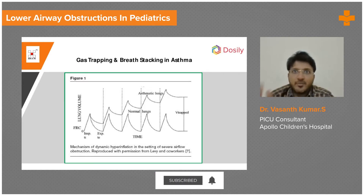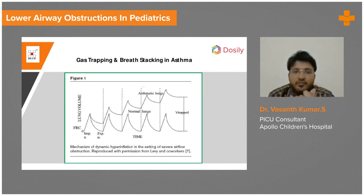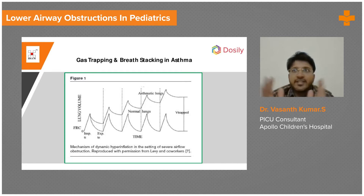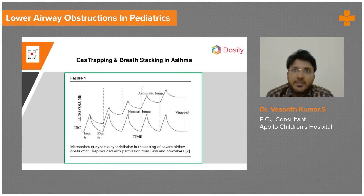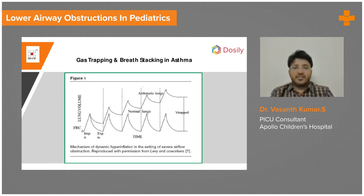Because the lung is like one big barrel, the venous return can drop down. There is a chance of pneumothorax because the alveoli are already filled with too much gas. Sometimes the air is so much that the patient can suddenly go into cardiac arrest.